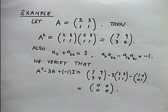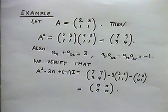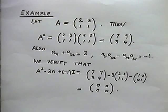Let me give a numerical illustration of this remarkable result. Take the matrix A equals [2,3; 1,1]. If you find the square by multiplying A by itself you get [7,9; 3,4]. The trace of the matrix is 3, and the determinant is 2 minus 3, that is minus 1. So the characteristic equation of A is A² minus 3A minus I, and if you substitute for A this numerical matrix you will find that all four coefficients reduce to zero.